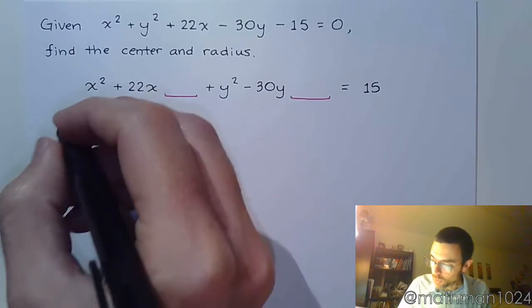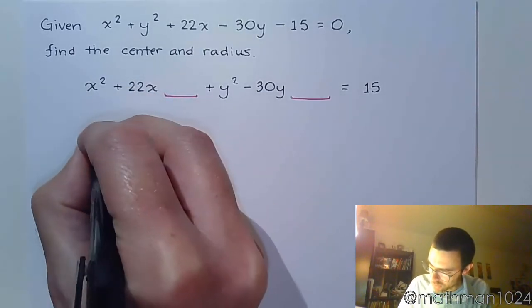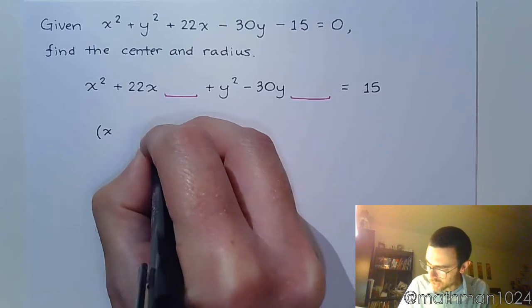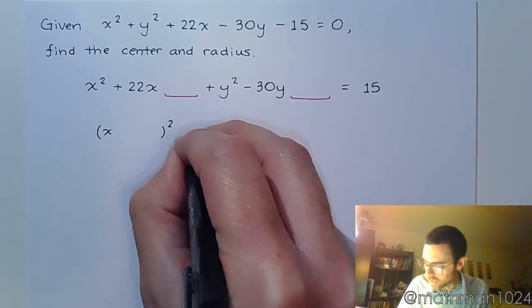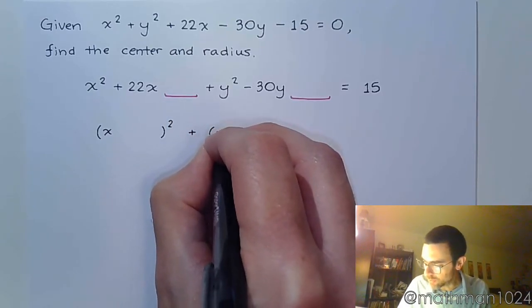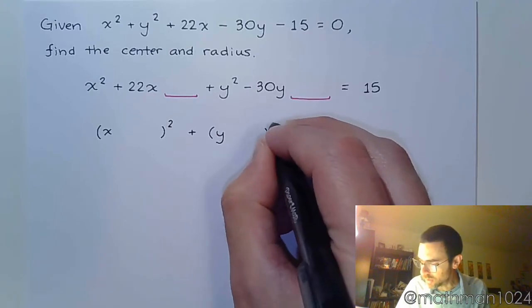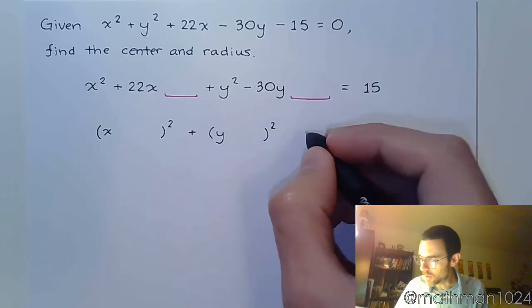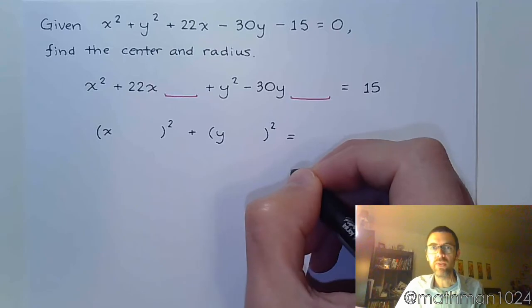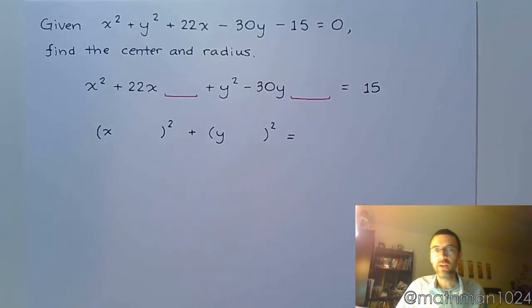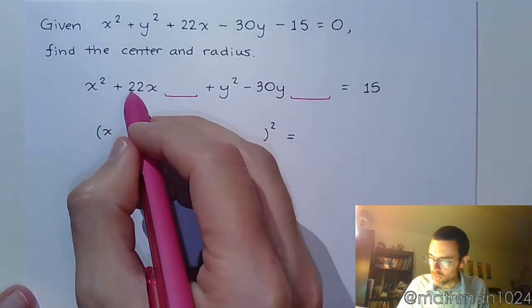Now if we're completing the square, we know we're going to add some stuff so that we can take all of these x's and write that as a square. And similarly, we'll have the same thing with the y's. Then we're going to see what happens on the other side of the equation. So first, we have to complete the square.